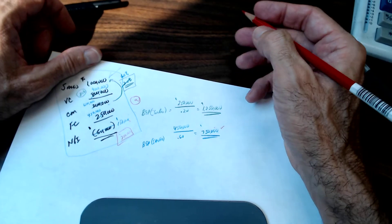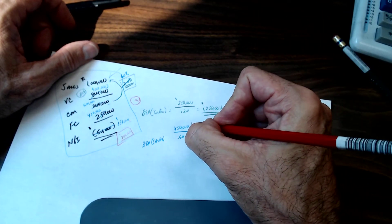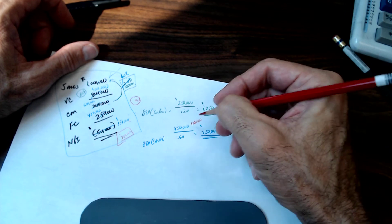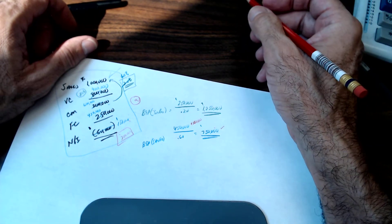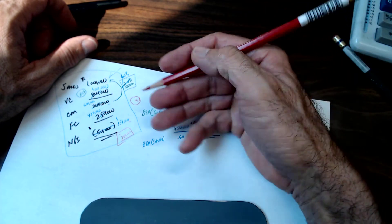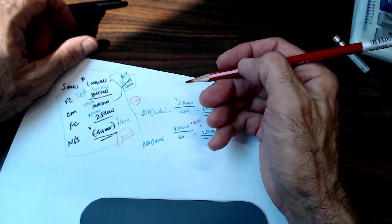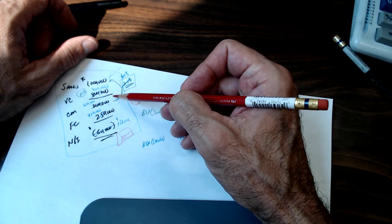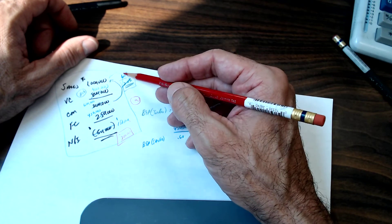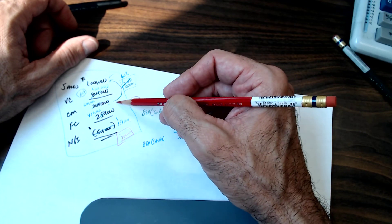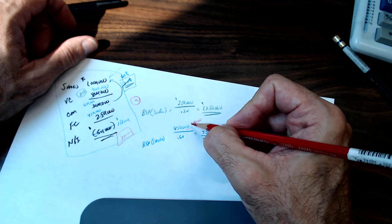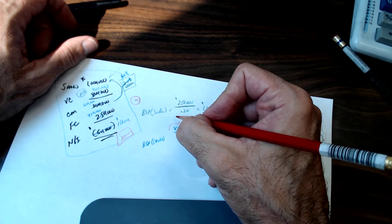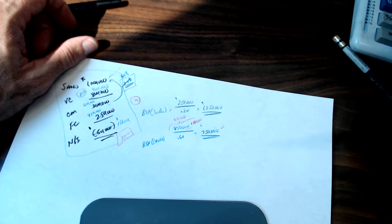Remember what we do with target net income: add it to the numerator. So what would my sales have to be so that, at a contribution margin ratio of 60%, my 60% would cover my fixed costs and give me $200,000? The fixed costs plus target net income: $450,000 + $200,000 = $650,000. That's $650,000 divided by 0.60.